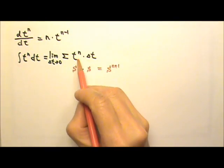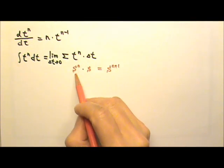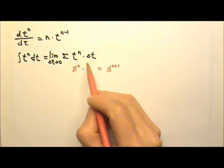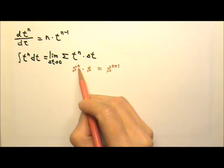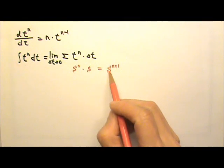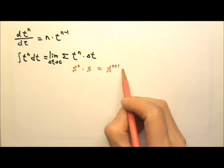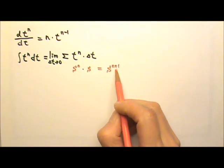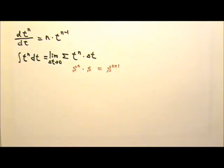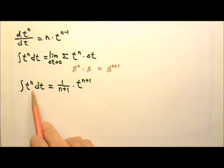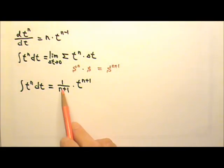Unit-wise, if t is time in seconds, then t to the nth times delta t would have a unit of seconds to the nth degree times seconds, which gives us seconds to the n plus 1. This means we will gain one degree of power when we integrate a polynomial. The formula for the integration of t to the nth degree is t to the n plus 1 times 1 over the new exponent.